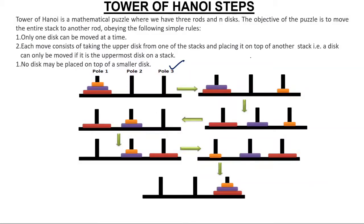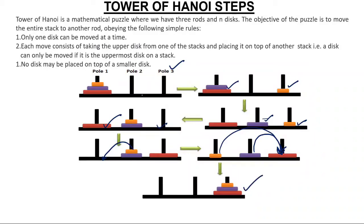In step one, we place the first disc in pole 3. In step two, we take the second disc and place it here. In step three, we place the smaller disc on pole 2. In step four, we place this disc here. In step five, we place this disc over here. In step six, we place the disc from pole 2 into pole 3. And finally in step seven, we place the last disc. So we get the same arrangement, taking a total of seven steps.